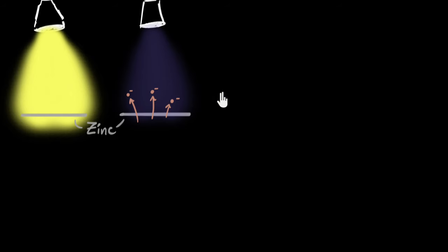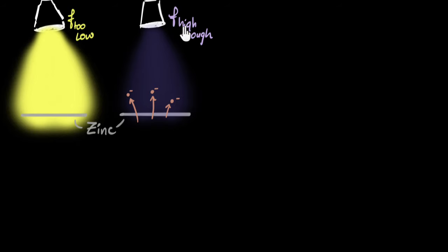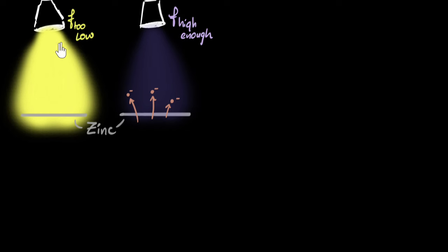It turns out that visible light has just too low frequency — too low to cause photoelectric effect — and ultraviolet light has high enough frequency for zinc to cause photoelectric effect. The goal of this video is to see how the quantum nature of light helps us understand why the brightness or intensity doesn't matter, but it's the frequency that matters.